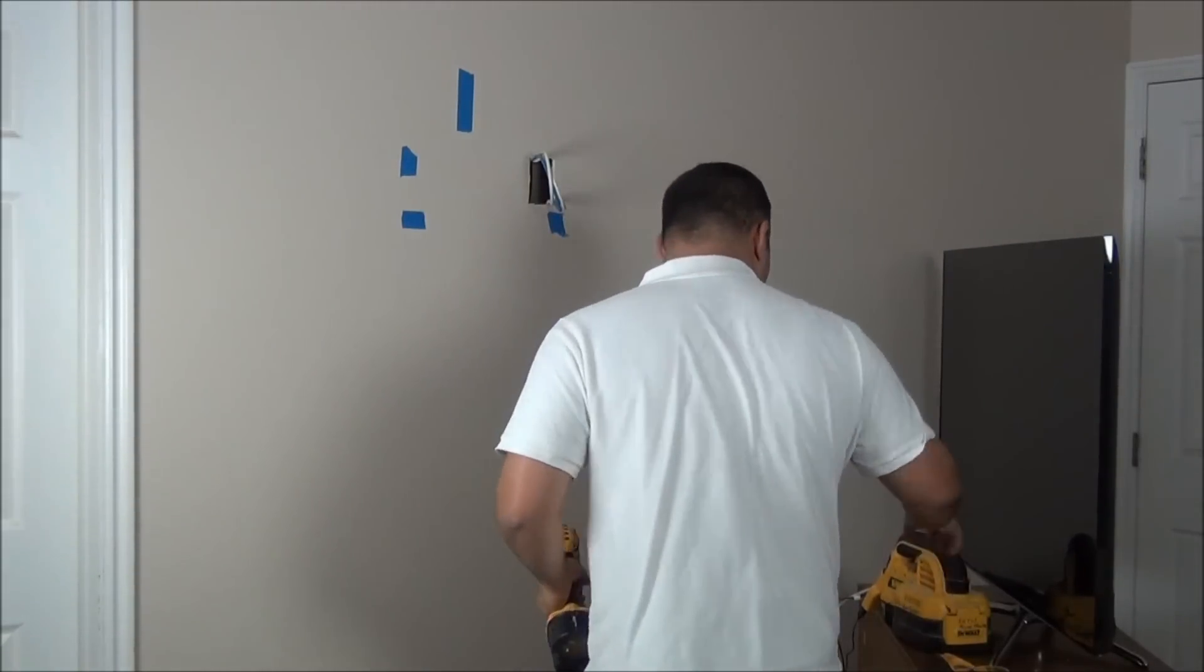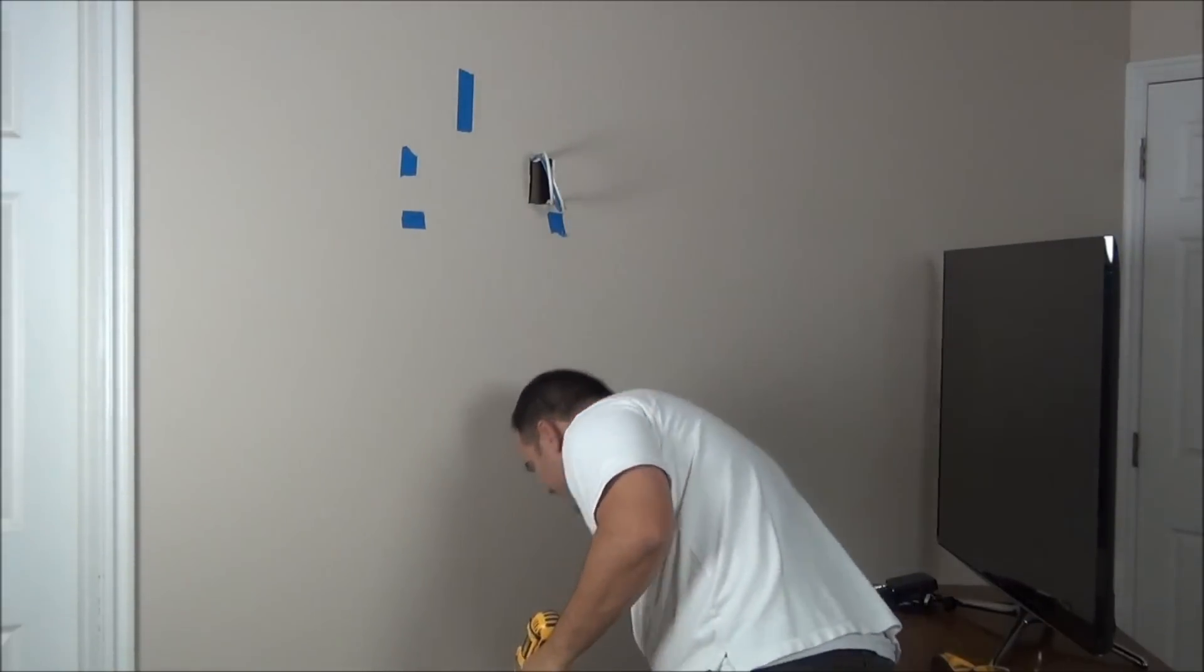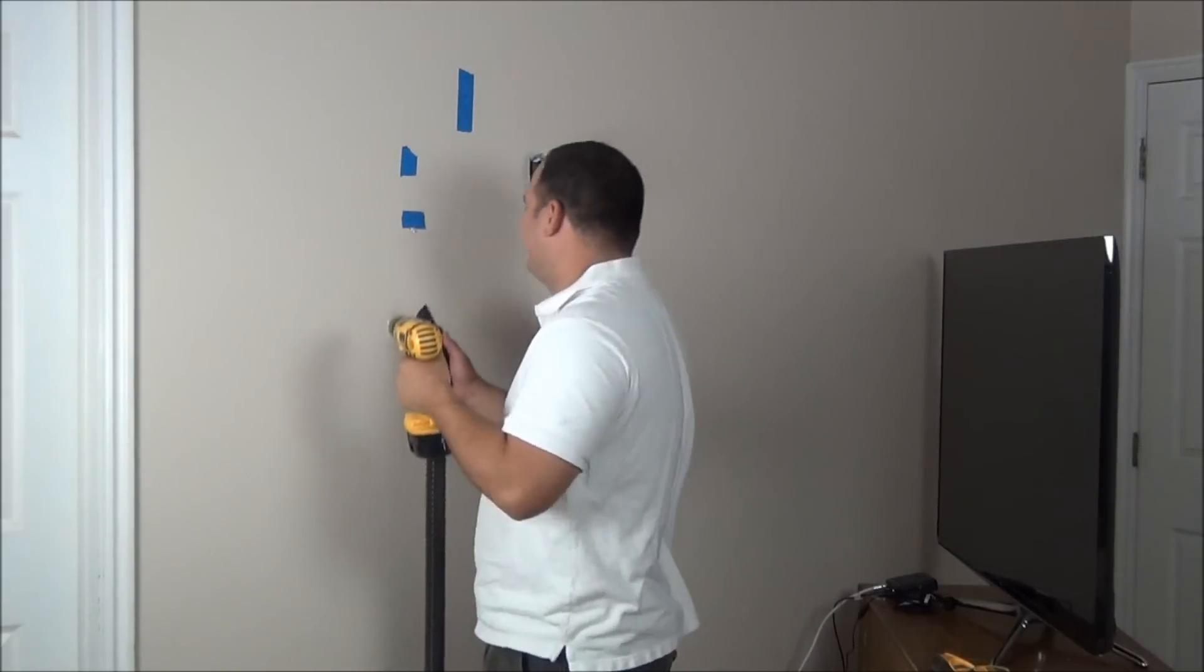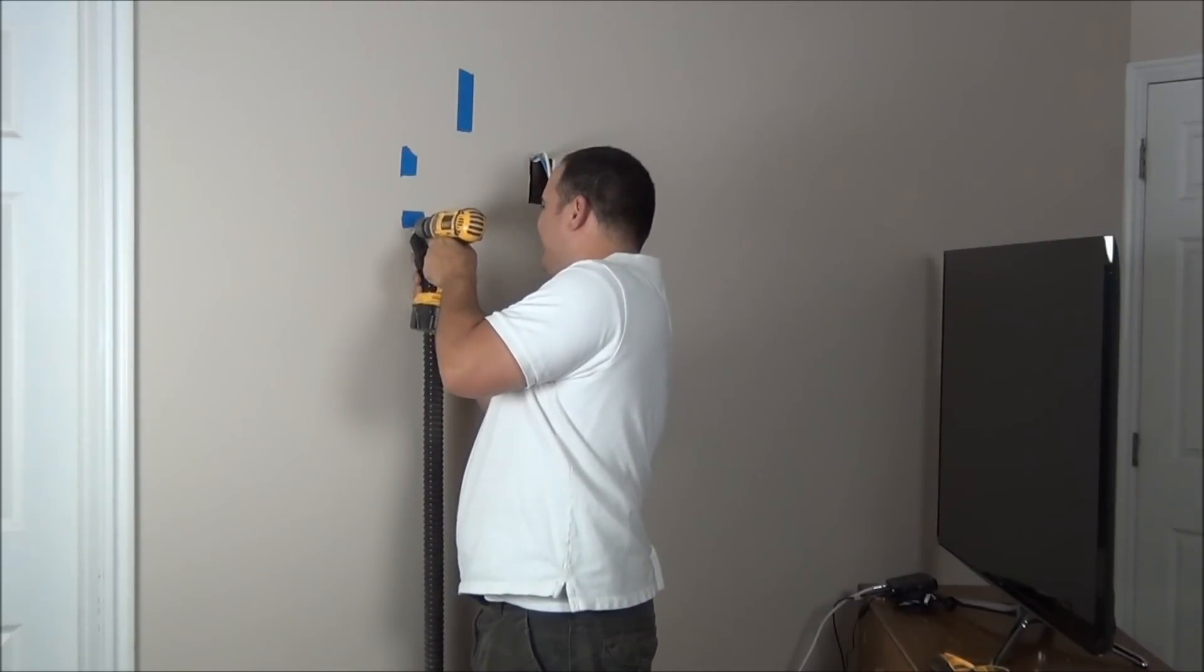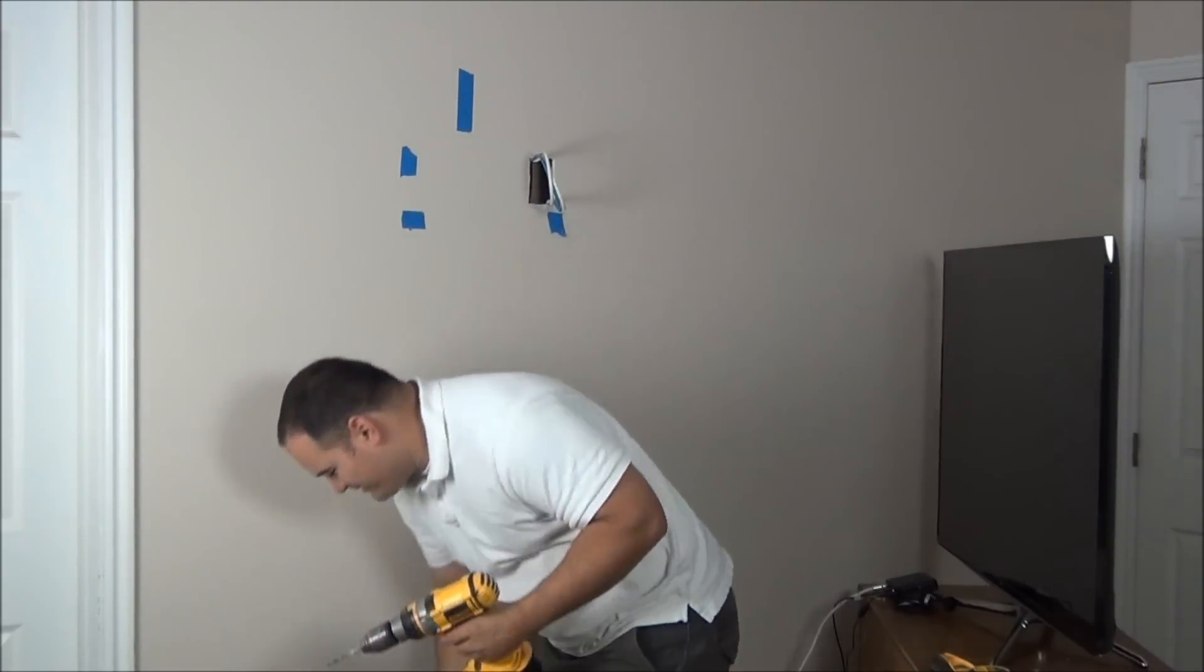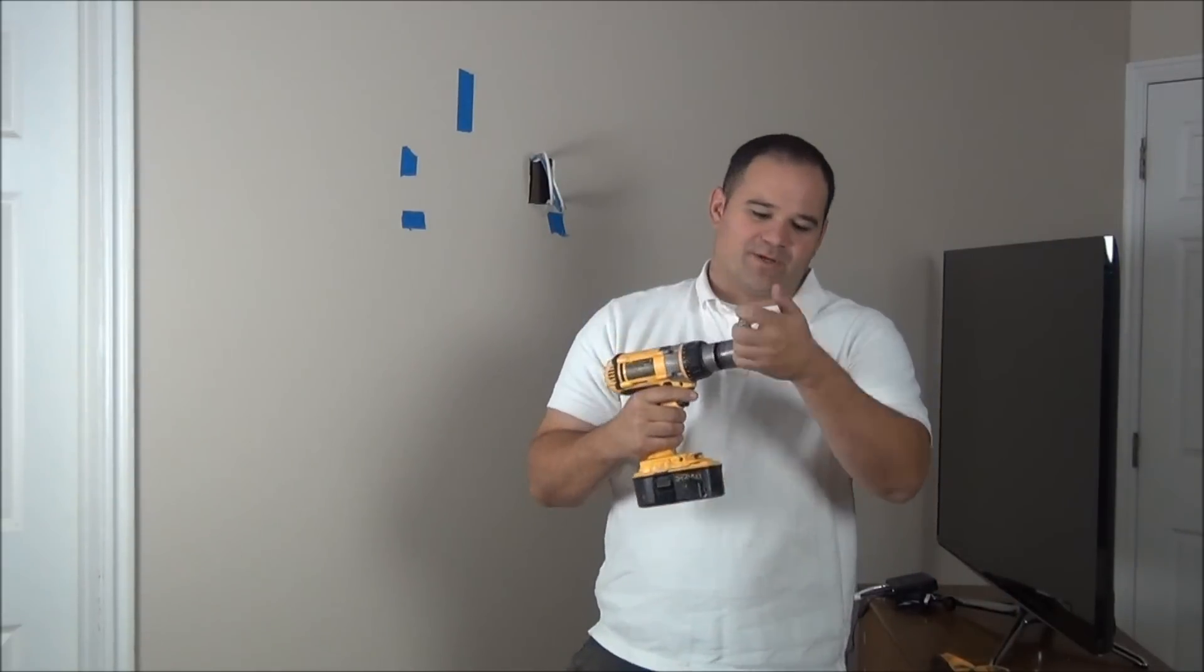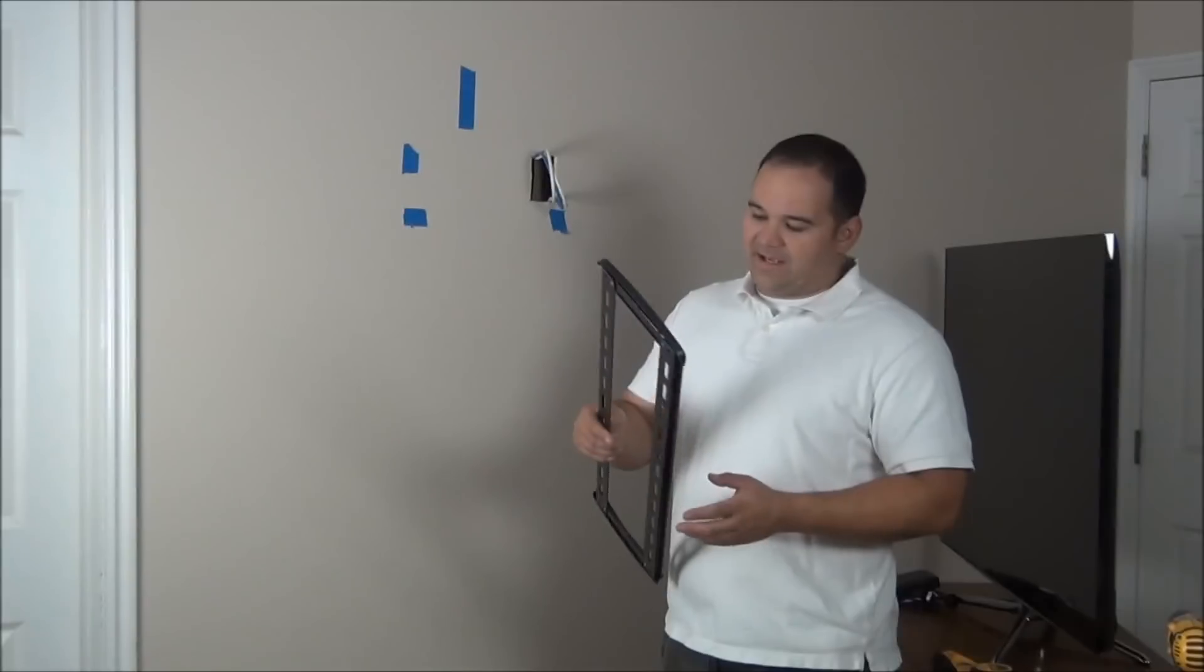I've already got them marked where I need to drill. I like to vacuum as I drill so I don't make a big mess everywhere. I guess I should turn it on. It's amazing how much better these things work when you actually turn them on. It's like ten times better. I just have a socket on the end of my drill. I have a little attachment that you can put on there. From here I'm going to grab my TV mount.